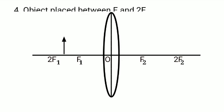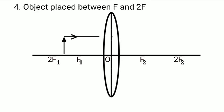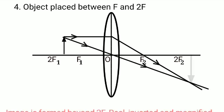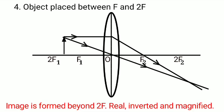When object is placed between F and twice F, incident rays after refraction they will meet beyond twice F. The image is formed beyond twice F. It is real, inverted and enlarged.